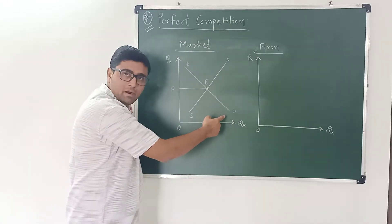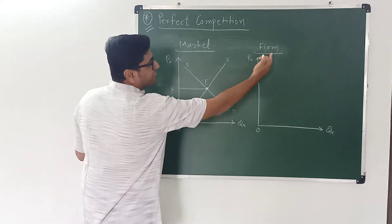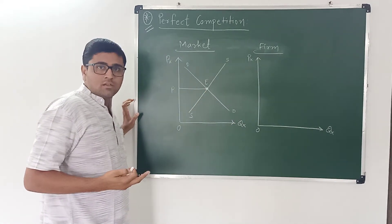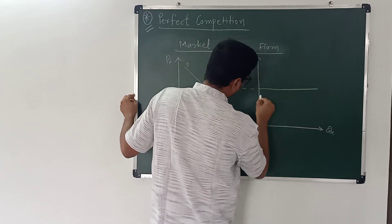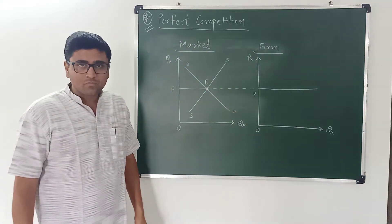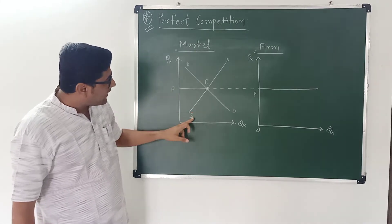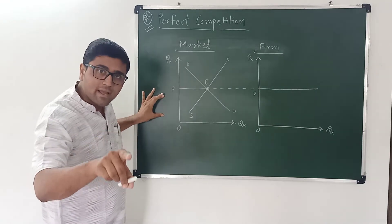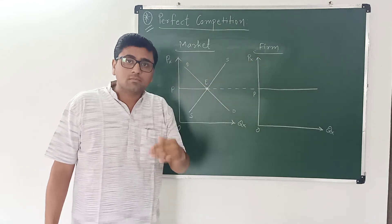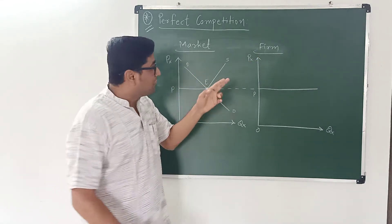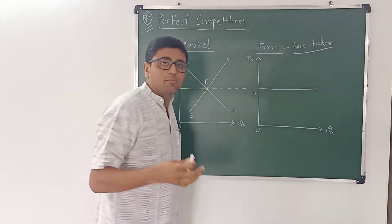This demand curve is the market demand curve, and this supply curve is the market supply curve. In a perfectly competitive market, each firm will accept this price. If I extend the line OP, this price OP is determined by the market — that is, market demand and market supply. This price, which is determined by the market, will be accepted by the firm. So the firm does not decide the price. The firm is a price taker and not a price maker.